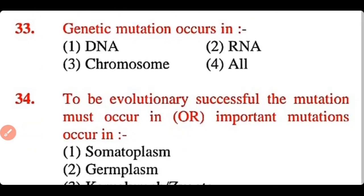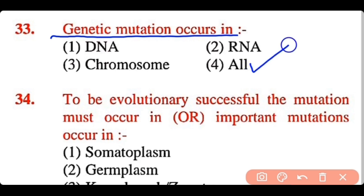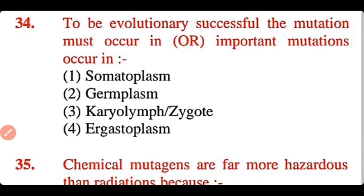Question 33: Genetic mutation occurs in: DNA, RNA, chromosomes, or all of these. The correct answer is option 4. Genetic mutation occurs in DNA as well as RNA and chromosomes.